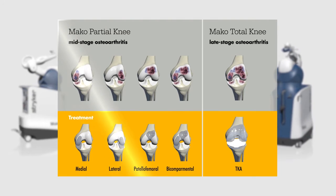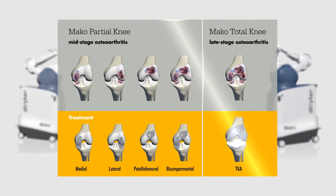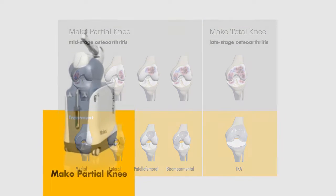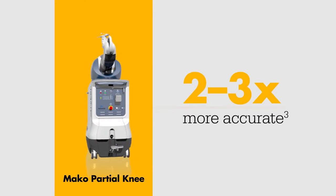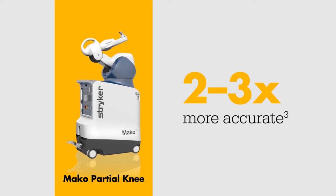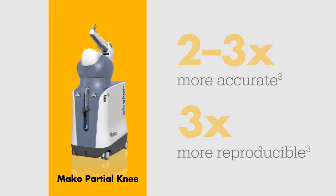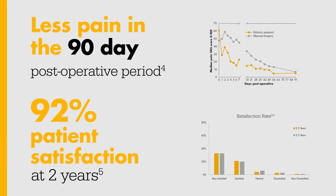Mako now addresses the knee continuum of care and enables you to select the appropriate robotic arm assisted knee solution for each patient. The Mako Total Knee application was built upon the foundation of clinical success with Mako partial knee, which has been shown to be two to three times more accurate and three times more reproducible than manual techniques, resulting in less pain in the 90-day postoperative period and 92 percent patient satisfaction at two years.